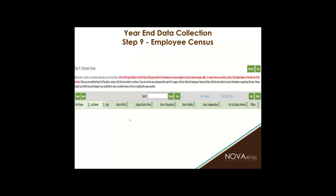Step nine is the employee census — that's what this webinar is all about today. You'll see there are no names listed if it's the first year this project is with NOVA 401k. If you have been with NOVA in a prior year, you will see the employees listed from the prior year's census data. You can export all of this information into an Excel file template with the information we are requesting. Simply click on the export field, download an Excel file, and save it to your computer. When you're done, log back into your Plan Sponsor Link web portal, go back to your year-end data collection project, go to step nine, and click import to bring that Excel file back in.